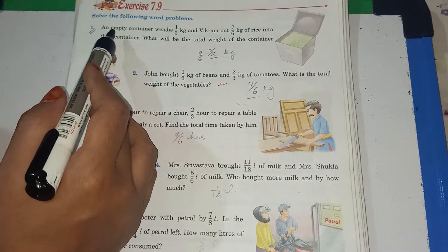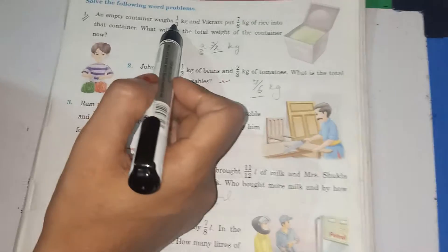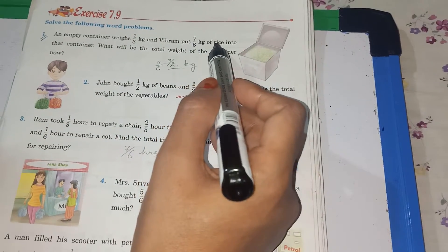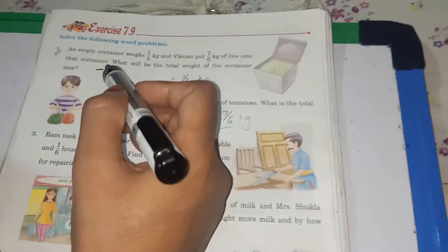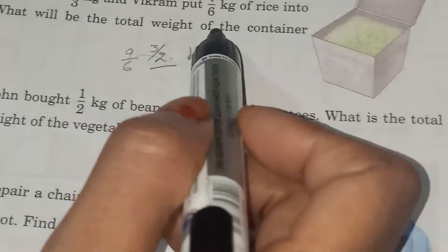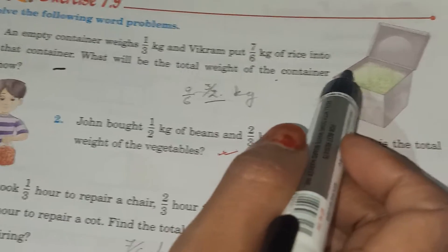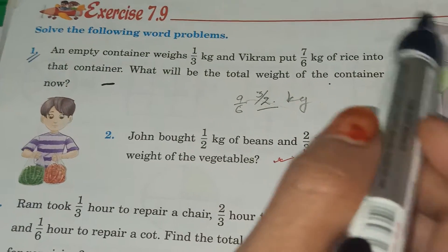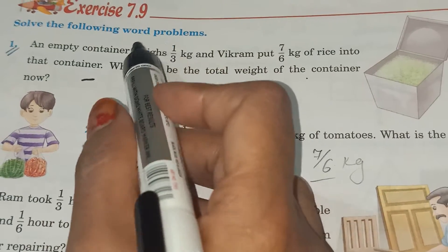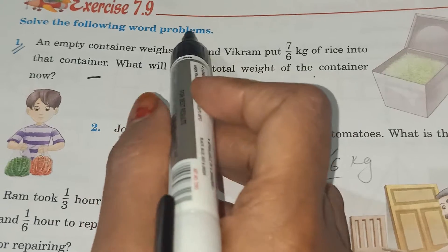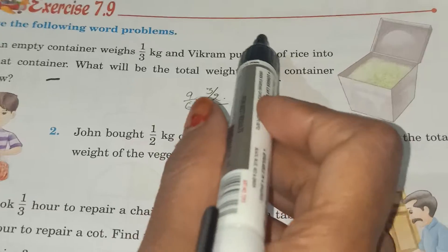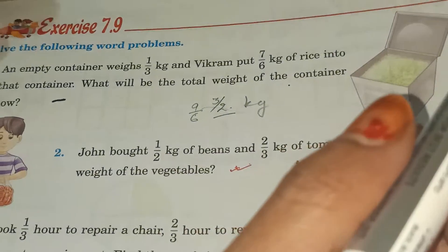An empty container weighs 1 by 3 kg and Bikram put 7 by 6 kg of rice into the container. What will be the total weight of container? Now, one container have how many weights from beginning? 1 by 3 and again we put in, Bikram put 7 by 6 kg.